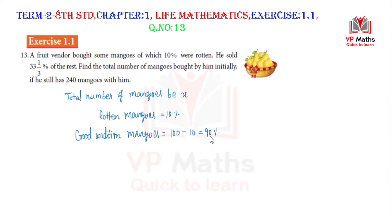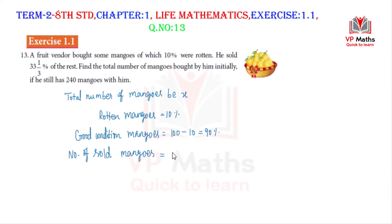90% of the mangoes are good (not rotten). So the good mangoes equal 90/100 multiplied by x.